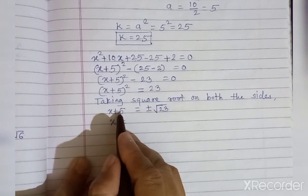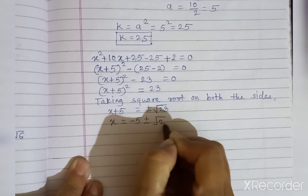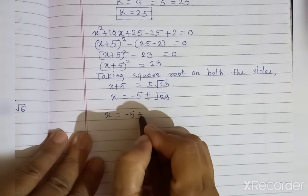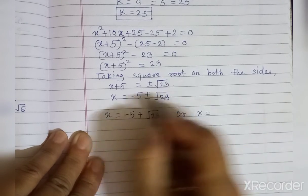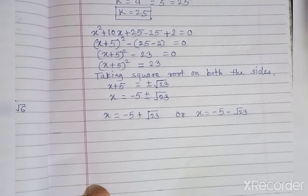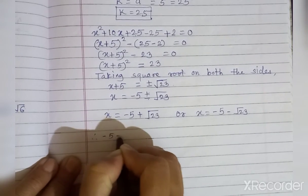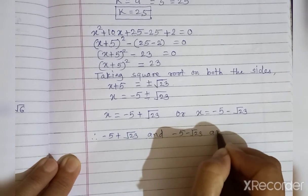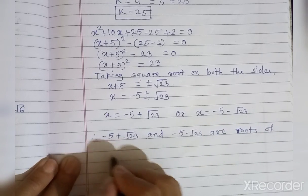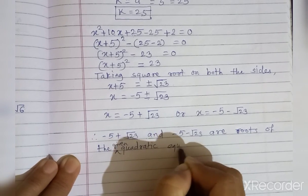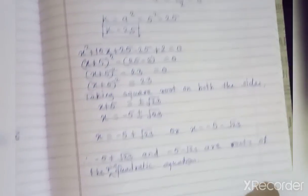So x = -5 ± √23, since 5 is taken to the right-hand side it becomes minus 5. We get two values: x = -5 + √23 or x = -5 - √23. Therefore, -5 + √23 and -5 - √23 are the two roots of the given quadratic equation. In this way you can solve the given quadratic equation by the completing square method.